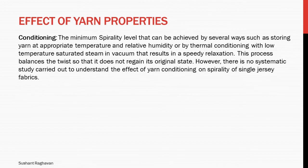The minimum spirality level can be achieved by storing yarn at appropriate temperature and relative humidity, or by thermal conditioning with low-temperature saturated steam in vacuum, which results in speedy relaxation. This process balances the twist so that it does not regain its original state. However, there is no systematic study carried out to understand the effect of yarn conditioning on spirality of single jersey fabrics.